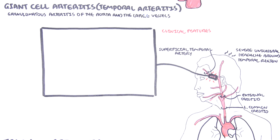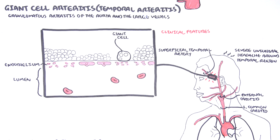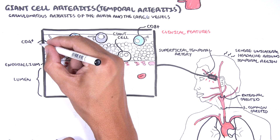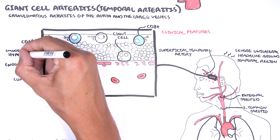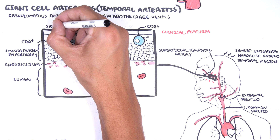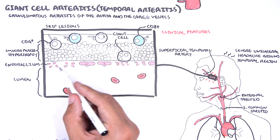Looking at the affected artery, the histopathological findings include presence of giant cells. There is panarthritis — inflammation of all the vessel layers — presence of CD4 and CD8 lymphocytes and macrophages. All these cells are usually found in the smooth muscle layers of the vessel in giant cell arteritis. A characteristic feature is that the inflammation occurs in segments along the artery, like skip lesions.